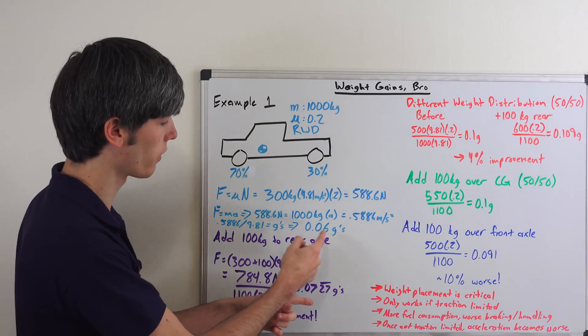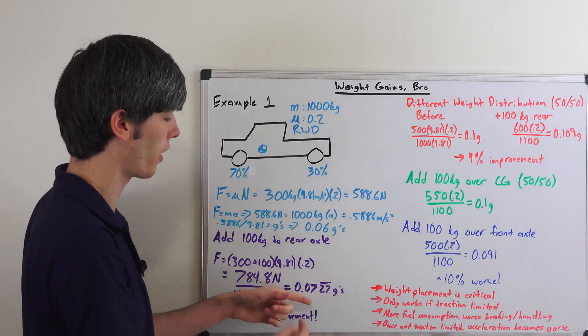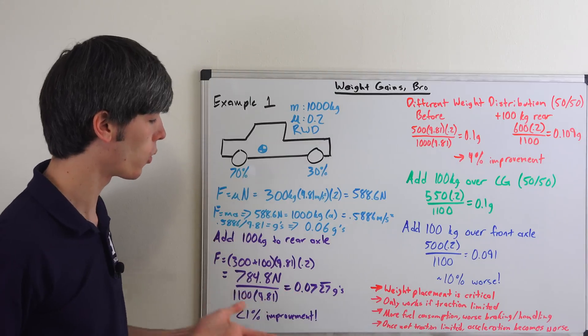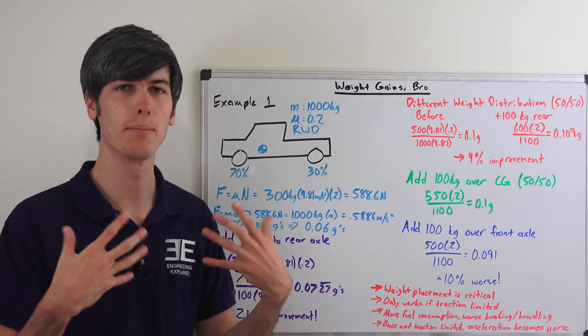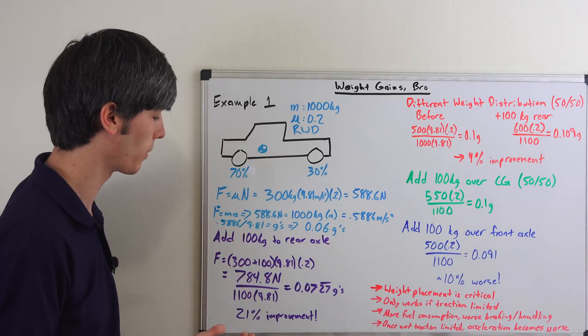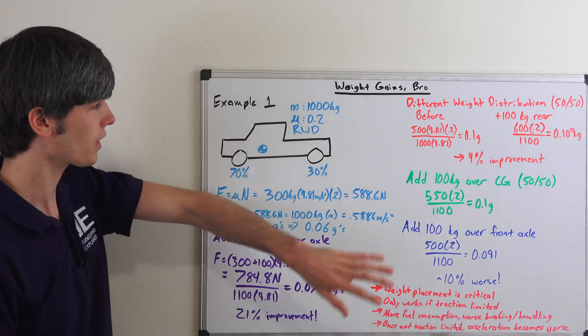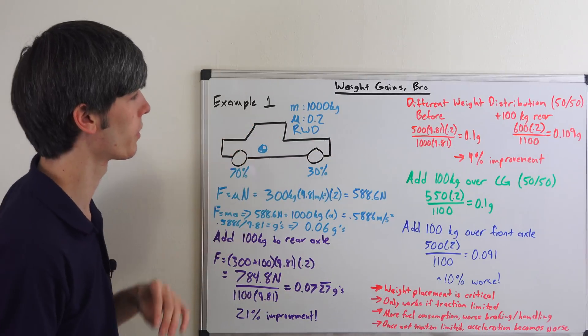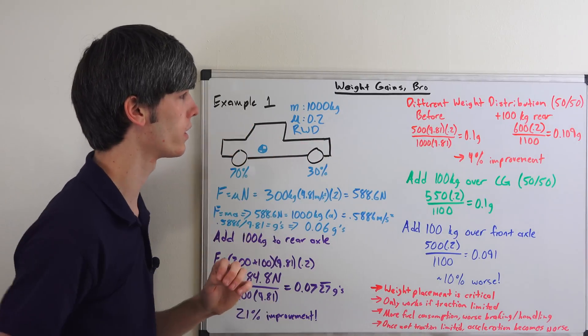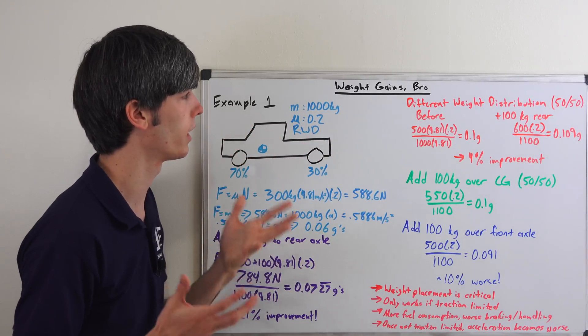So this may not seem like a huge difference, 0.06 versus 0.0727, but actually it's a 21 percent improvement in the maximum amount that your vehicle can accelerate. So that's pretty significant. Now what if we change up the scenario and we have a different weight distribution? As I mentioned previously it is important.